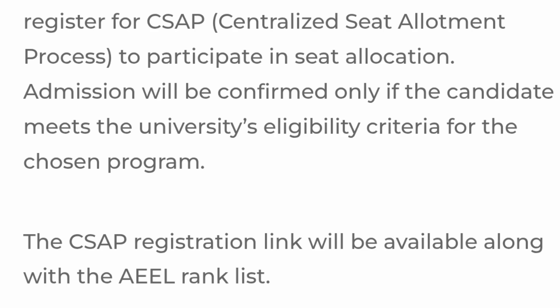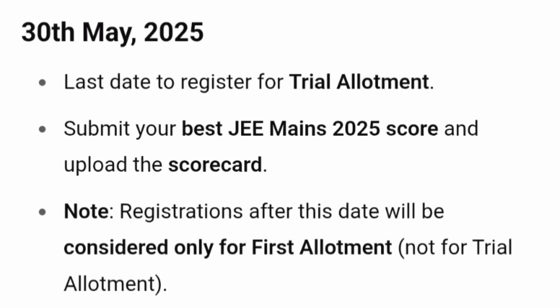It is a compulsory activity to get the seat allocated. The CSAP registration link will be available along with your AEEE rank list, which you would have received. You can click from there, or you can go to the AEEE main portal — I have shown the link in the thumbnail. May 30, 2025 is the last day to register for trial allotment, so don't miss it.